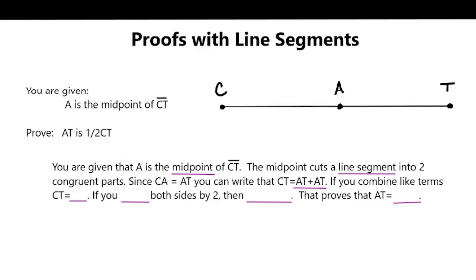You get 2AT. So now if you blank both sides by 2, if you divide both sides by 2, then one half of CT is equal to AT.